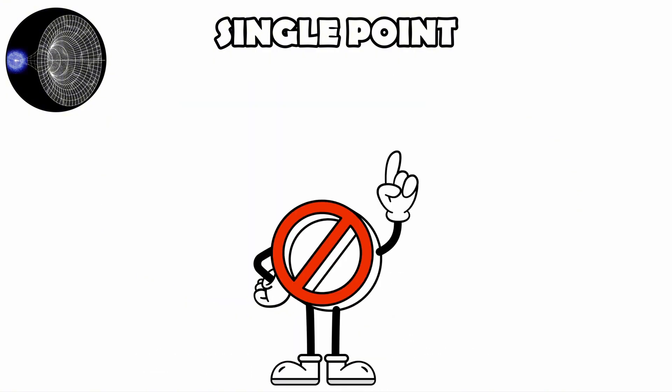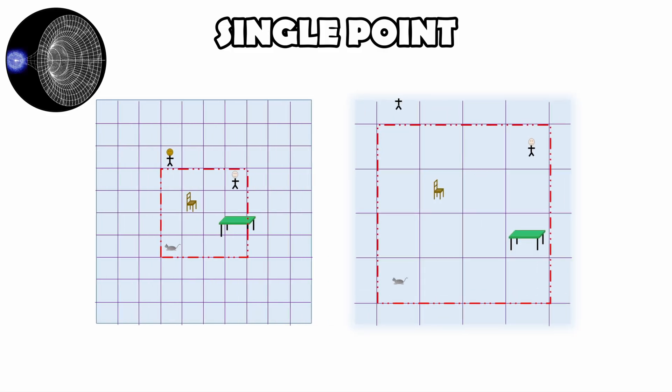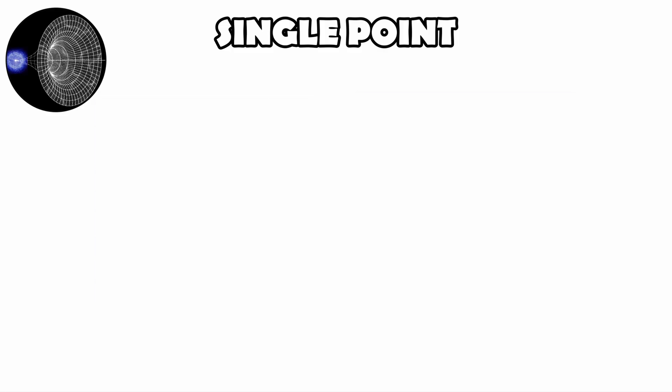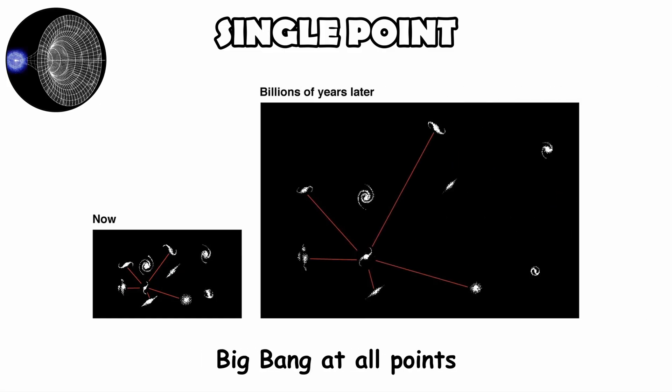So the universe did not begin from a point in space. Rather, space itself was compressed to a state of extreme density and then expanded everywhere at once. That's why cosmologists say the Big Bang happened not at one point, but at all points.